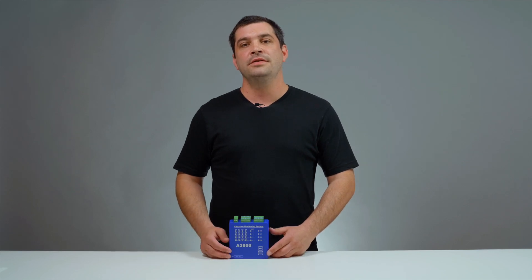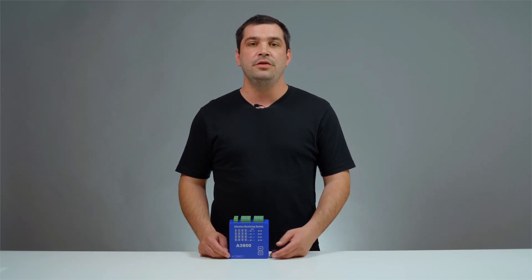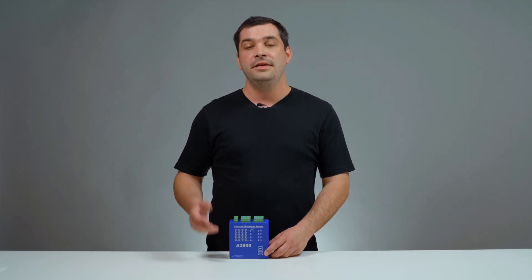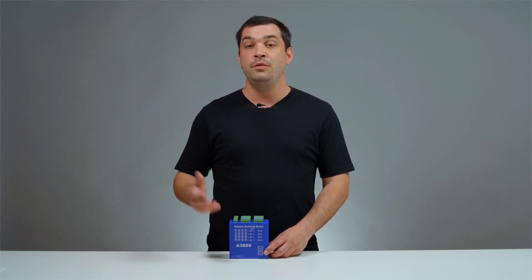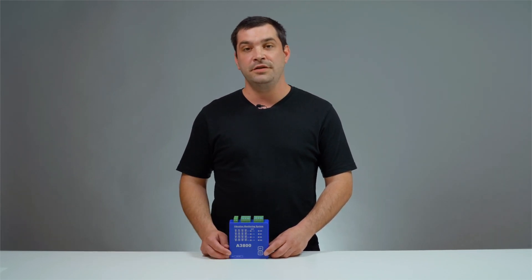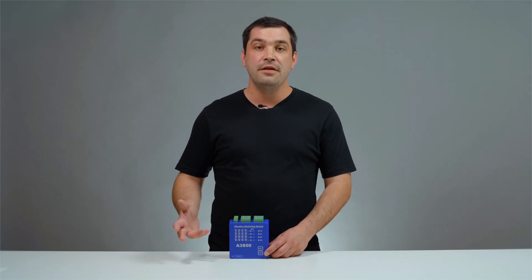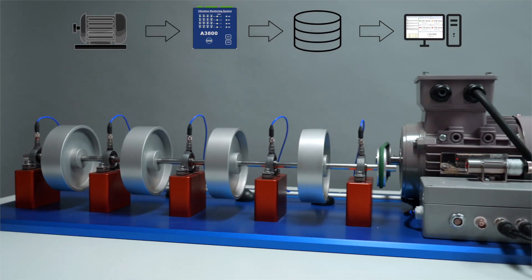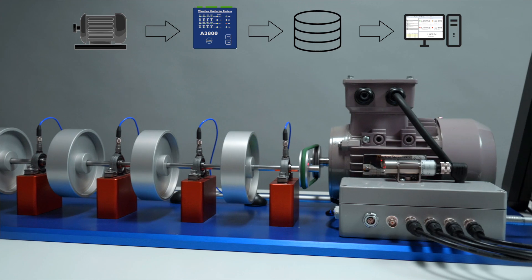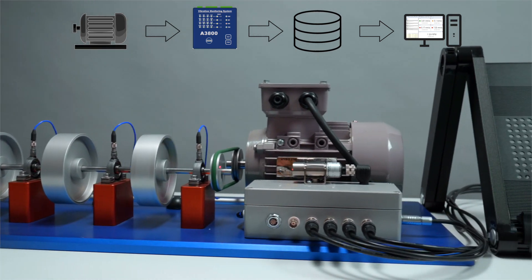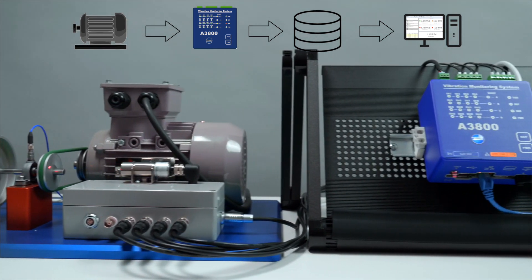Online monitoring systems are made for 24x7 machinery monitoring. They are meant for critical machines in your factory on which the whole production can rely on, so you want to know their health at any time. In practice it looks like this: you have your machine with acceleration sensors permanently installed on machine bearing houses.